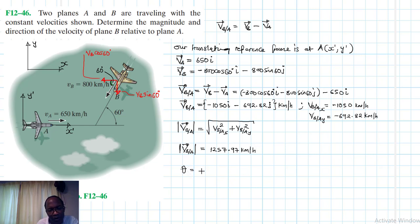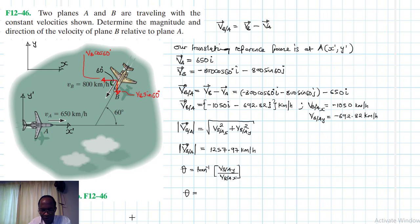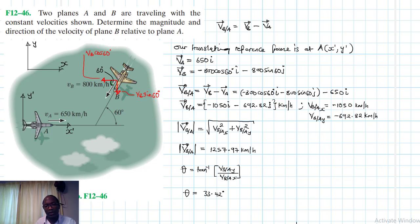Now let's find the angle. The angle theta equals tan inverse of (VB/A_y divided by VB/A_x), which is tan inverse of (negative 692.82 divided by negative 1050). This gives us 33.42 degrees.